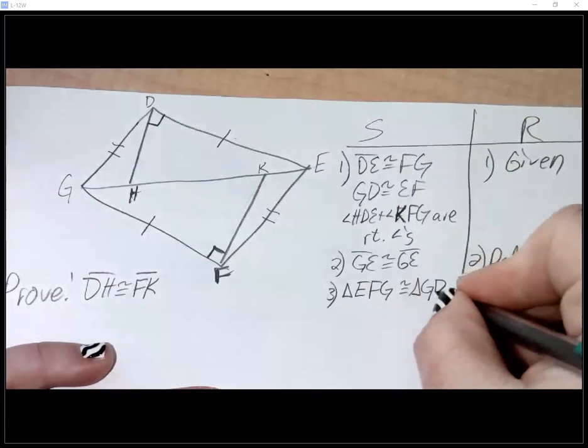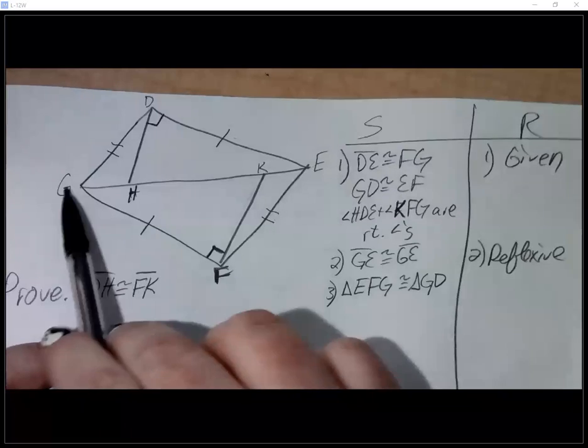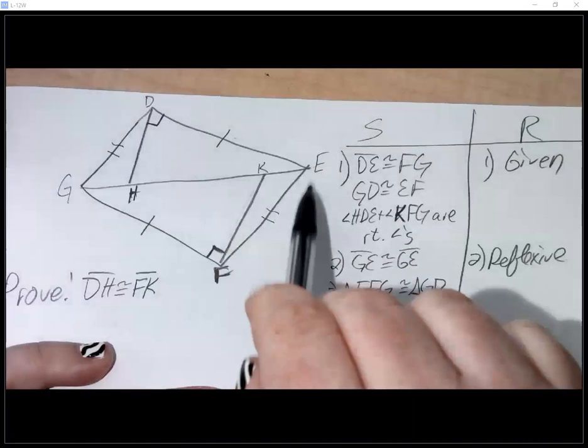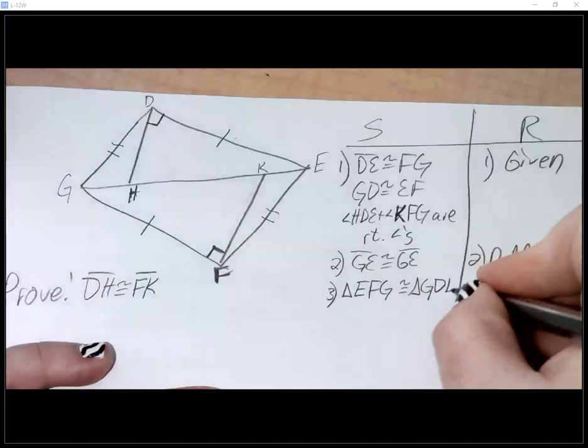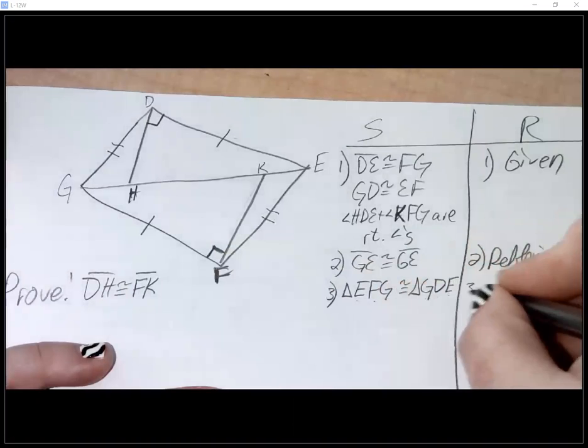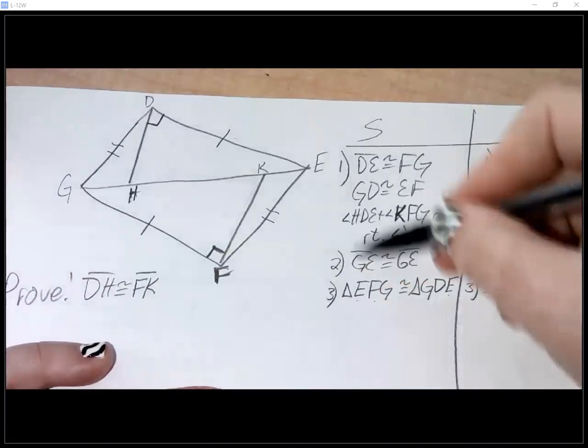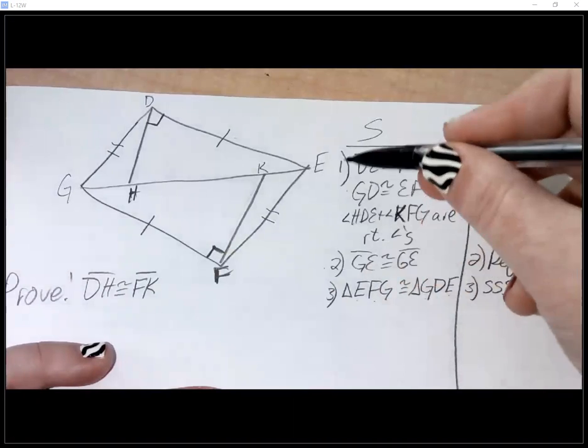And then G is one slash and no slashes, one slash no slash E. So it would have to go, if I did EFG, I'd have to go GDE. And what's my reason for that? Yes, side side side. So remember if I'm grading this and you say this, I'm looking up there's a side, there's a side, there's a side, there's your SSS.